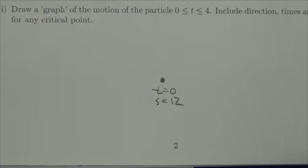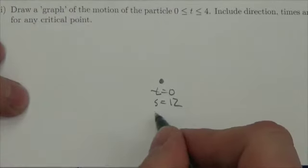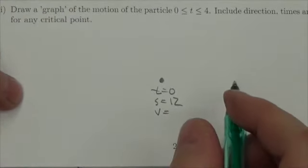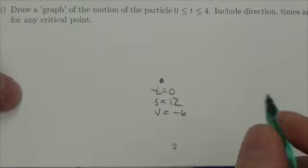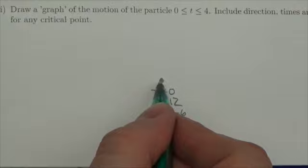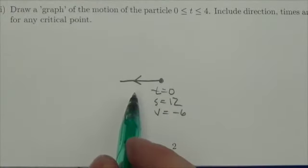Now, at that exact moment, our velocity is going to be negative 6. So, which means I'm moving in the negative direction, which means for the first little bit, we are moving to the left here.